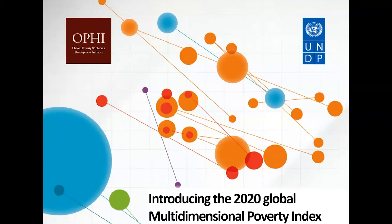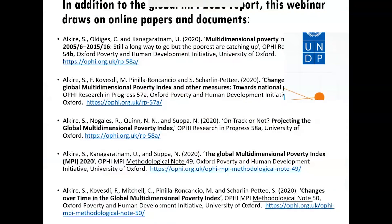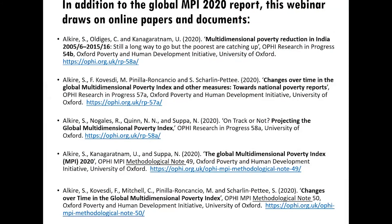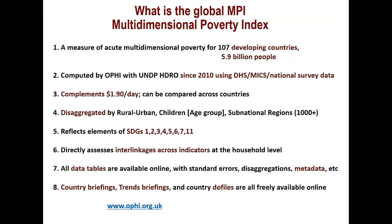In this first presentation, we will give an overview of the Global Multidimensional Poverty Index 2020 and its links to the Sustainable Development Goals. Other presenters, Monica Pinilla-Roncancio and Ricardo, will share findings related to changes over time and projections. The papers and methodological notes we are drawing on are all online. The Multidimensional Poverty Index, launched 10 years ago, is a measure of acute multidimensional poverty. This year it covers 107 developing countries and 5.9 billion people.